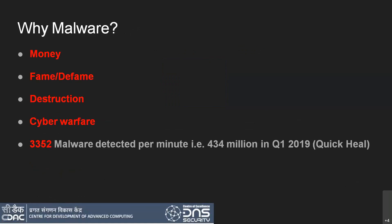Why does malware exist? Malware is created for earning money — it's a separate industry. It's also used to fame or defame groups of people, and we have cyber warfare where countries want to defame others by exploiting internet resources or websites. Quick Heal, an Indian antivirus company, published statistics in Q1 2019 saying there are about 3,000 malwares detected per minute.